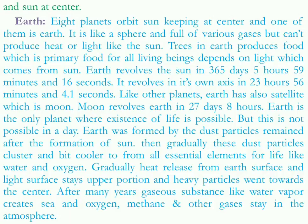Like other planets, earth has a satellite, which is the moon. A satellite is that which revolves around the planet. So the moon revolves around the planet earth in 27 days and 8 hours. Earth is the only planet where existence of life is possible, because for the other seven planets, scientists cannot find any evidence that there can be life. But they are continuing their research and trying to find some existence of life in Mars.